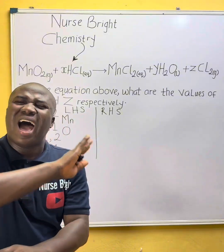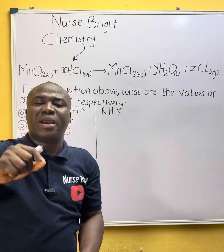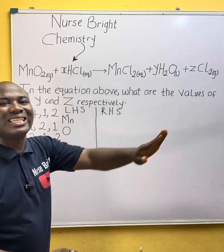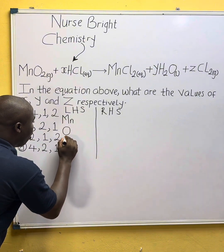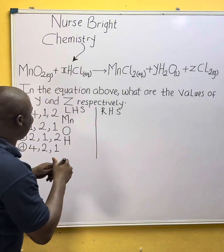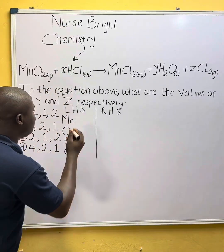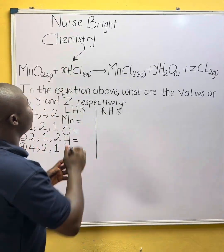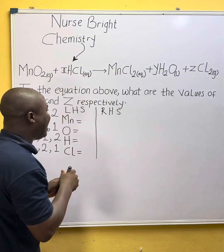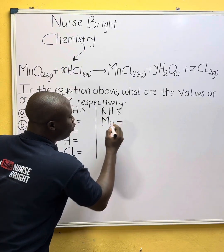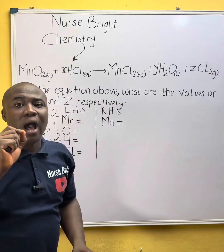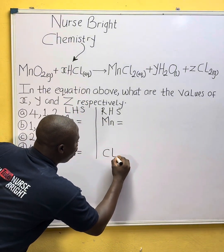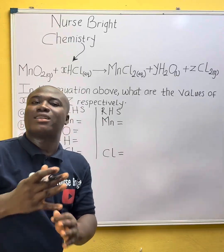We are going to work on the numbers. Let's identify the other elements present in the left-hand side. Another element I'm seeing is H, which is hydrogen. Another element I'm seeing is Cl, which is chlorine. After doing that, I'll write equal signs for each, and then do the same from the right-hand side. From the right-hand side I can see manganese Mn as well, and chlorine Cl. I'll ensure I write chlorine where chlorine on the left was written, keeping them aligned so we understand what we are doing.